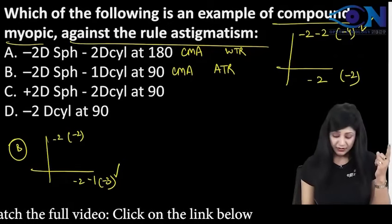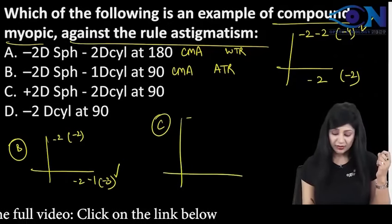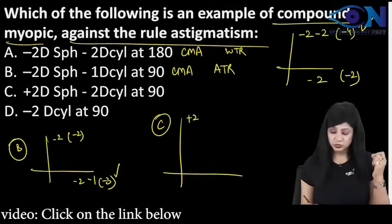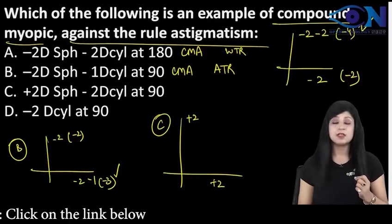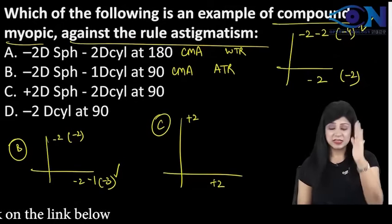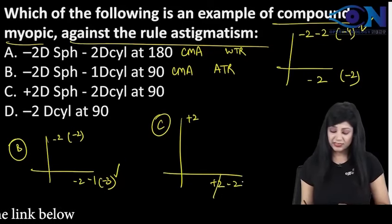Number 3: we are having C option where you are having plus 2 diopter spherical. So plus 2 here also and plus 2 here also. Minus 2 vertically you are giving. So I will add horizontally and these 2 will cancel.